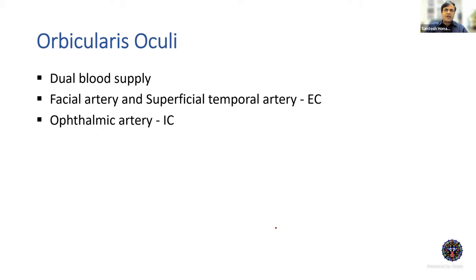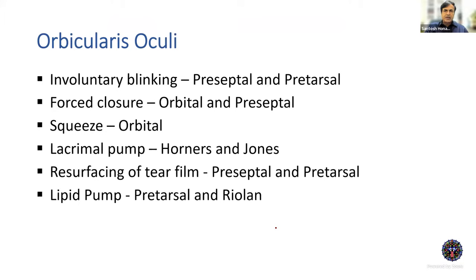Orbicularis oculi has dual blood supply — from both the facial artery and the superficial temporal artery (external carotid) and from the ophthalmic artery (internal carotid). Different parts have different functions. Involuntary blinking is performed by the preseptal and pretarsal components — the normal blink rate is 12–18 per minute when not using digital devices. Force closure is contributed to by both the orbital and preseptal orbicularis, whereas a firm squeeze is typically by the orbital portion alone. When assessing orbicularis function by asking the patient to squeeze forcefully against resistance, you are only assessing the orbital component; blink rate assessment tests the pretarsal and preseptal function.